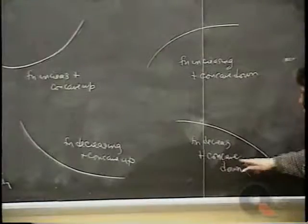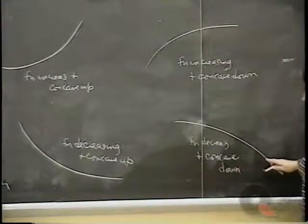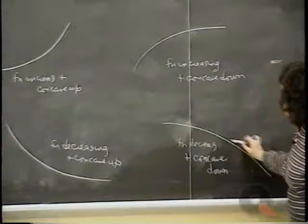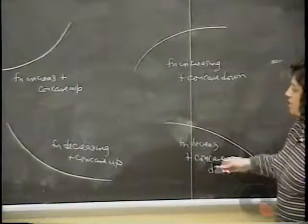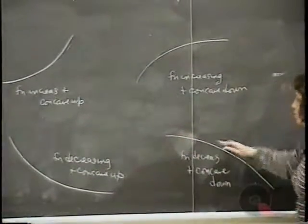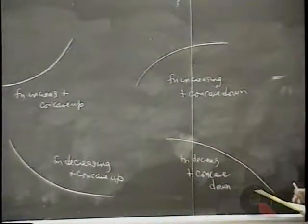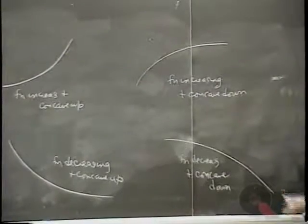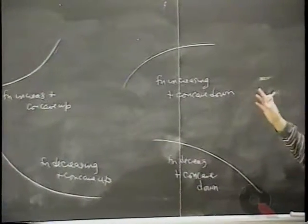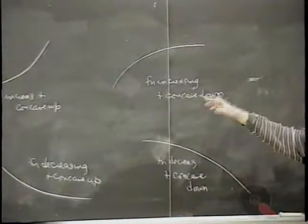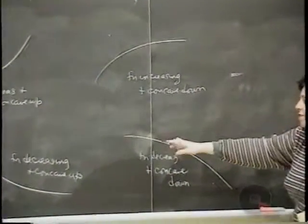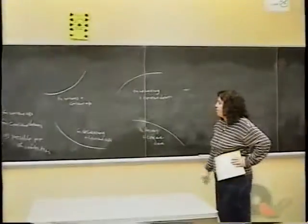So we have four combinations: decreasing and concave up — y values decrease but the curve is above its tangent line; and decreasing and concave down — y values decrease and the curve is below its tangent line. Don't confuse the two ideas.